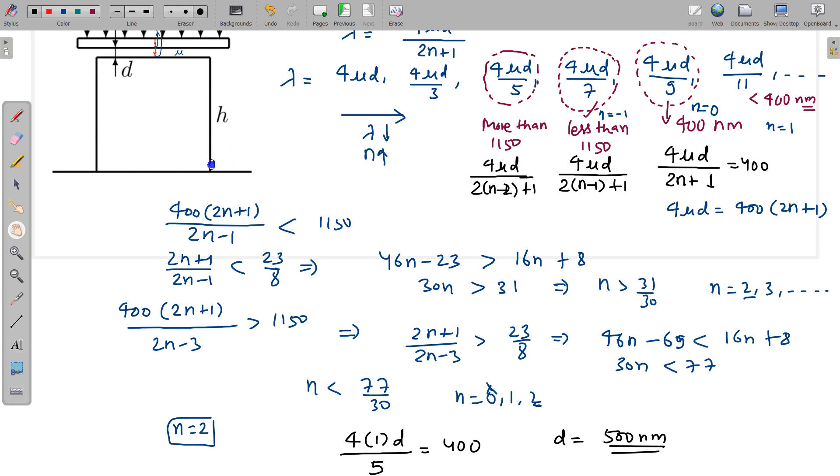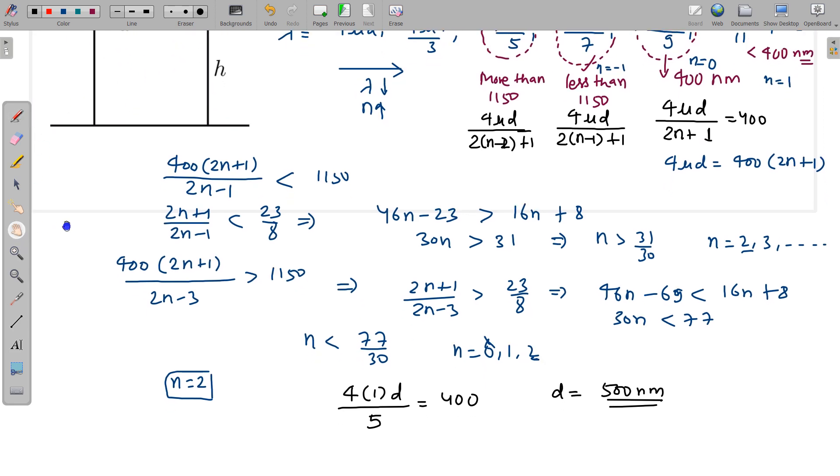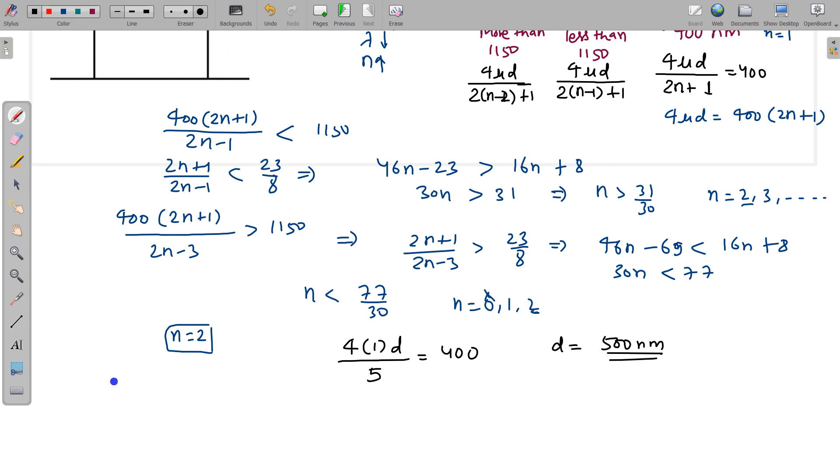Now we have to find the temperature rise such that the increment in length is equal to d. So Δl = lαΔt. We have to find ΔT which is Δl/(lα). Δl is equal to d, l is h, so we can put the values and the answer is approximately 3.1 degree Celsius.